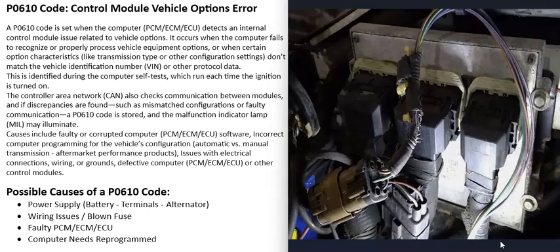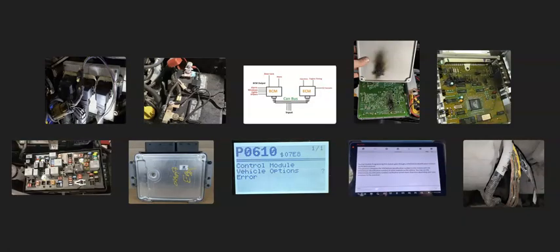In summary, the possible causes of a P0610 code come down to a battery/power issue, a wiring or CAN bus problem, or the main computer having failed or needing reprogramming. If this video helped you, please like, subscribe, and feel free to comment with questions or anything to add.